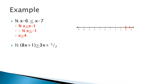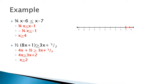Getting a little more complicated — try this one. Distribute the 1 half. Subtract 1 half from both sides. 5 halves minus 1 half gives you 4 halves, which is 2. Subtract the 3x from both sides, and we get x is greater than or equal to 2. And there's our answer on the number line.